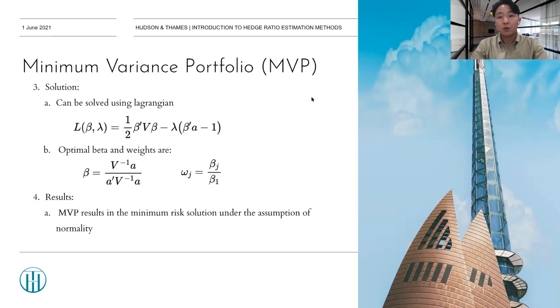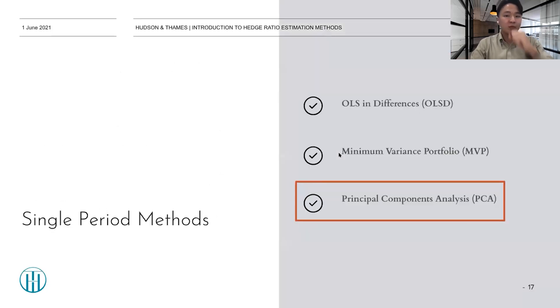And the solution corresponds to the portfolio on the left-most point on the efficient frontier. And it is worth noting that the MVP method delivers the minimum risk solution under the assumption of normality. But, if you go beyond the assumption, a number of alternative objective functions could be chosen as well. So, this may not be the optimal method for hedge ratio estimation as well.